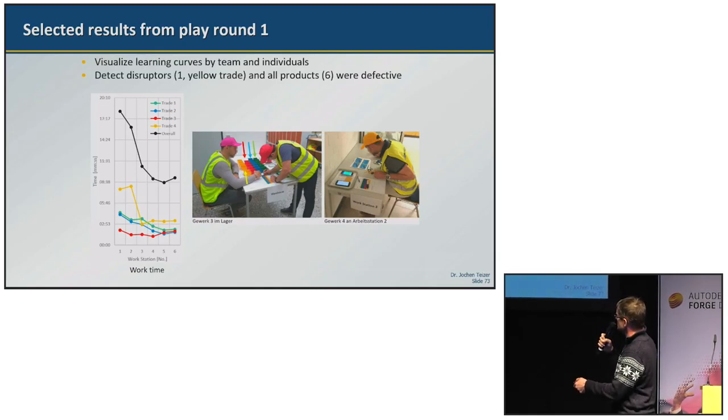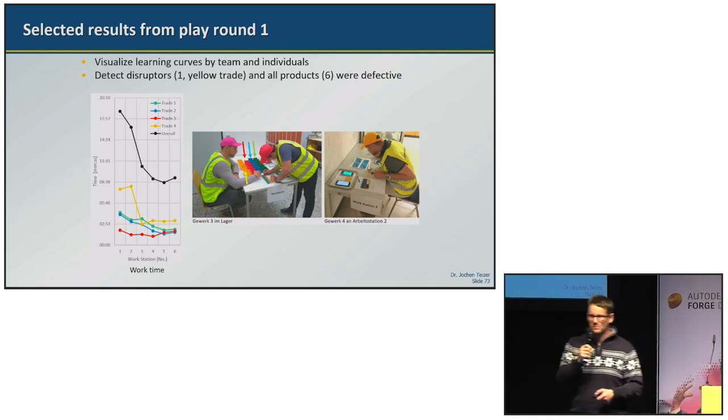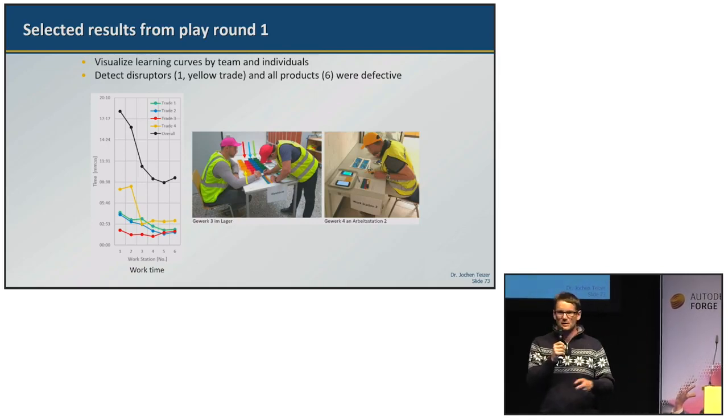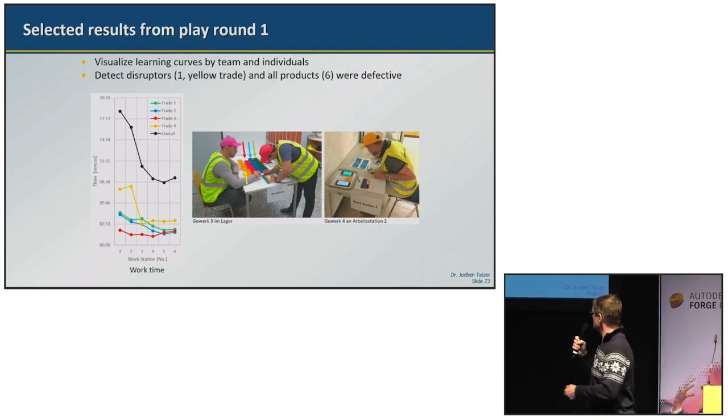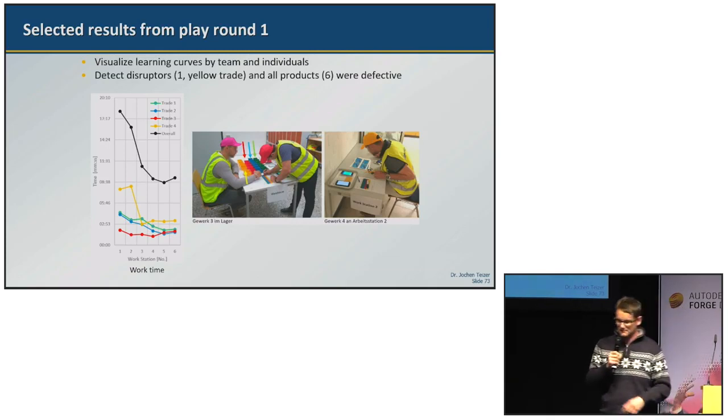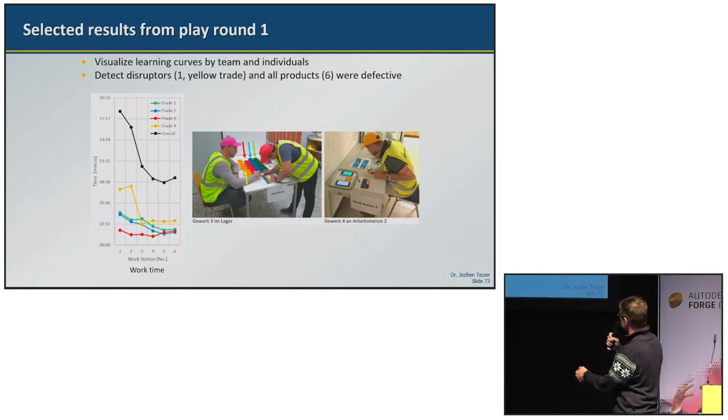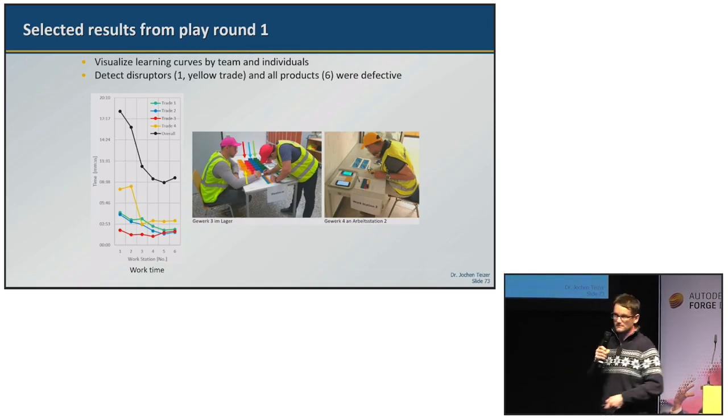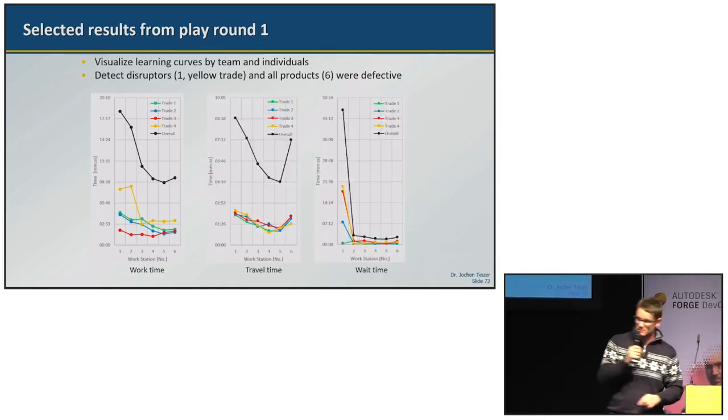You can see here the yellow trade had issues in the beginning. Probably he was not aware. I felt somehow he was tired, but anyway our data afterwards proved that he is in a difficult situation. Actually we were able to see that at the warehouse. While all other trades have been almost finished, except the red one I guess, the yellow trade is still at workstation two.